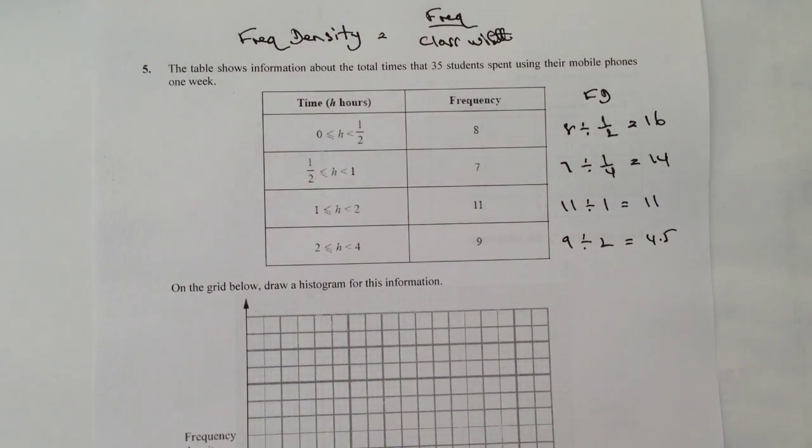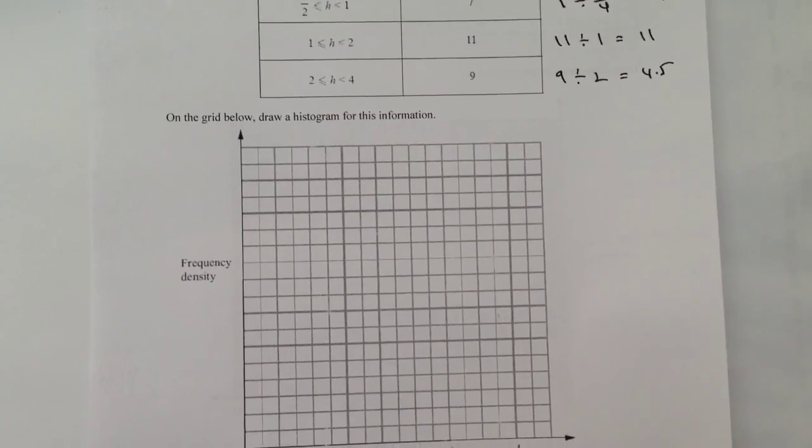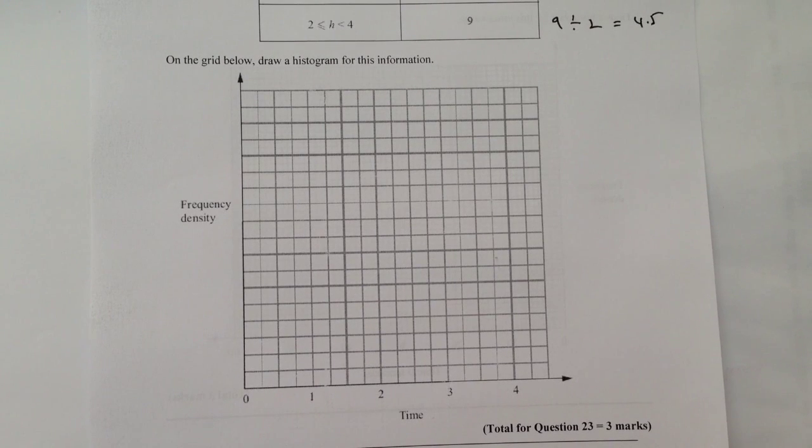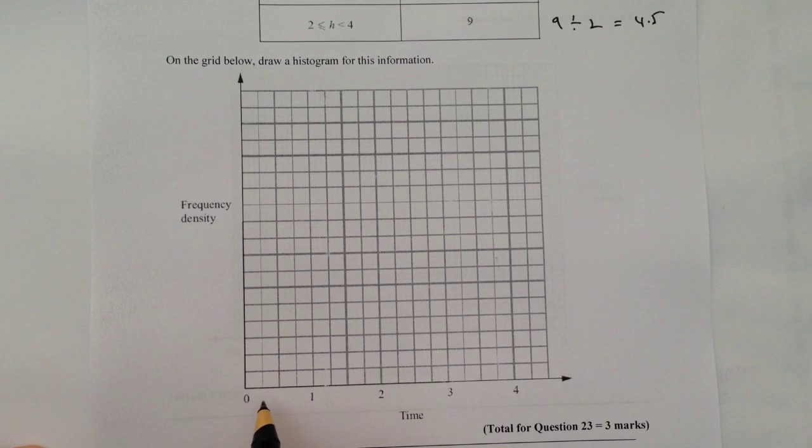And then really, it's just a case of plotting that information onto the graph as we have below. So the first one, and you might have to have a look at the worksheet itself just to remember the numbers, but the first one is we've got a class width of a half.